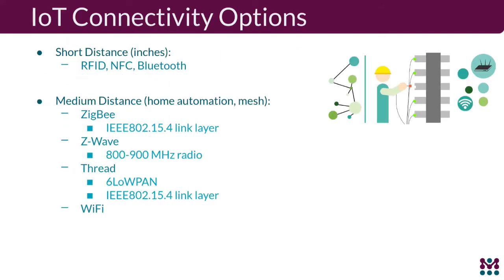Looking at connectivity options — not all are relevant to embedded Linux devices — there are options depending on range. For short range you have a couple of options. For medium distance, home automation is a big thing, with protocols like ZigBee and Thread competing to dominate, and Wi-Fi is also an option.